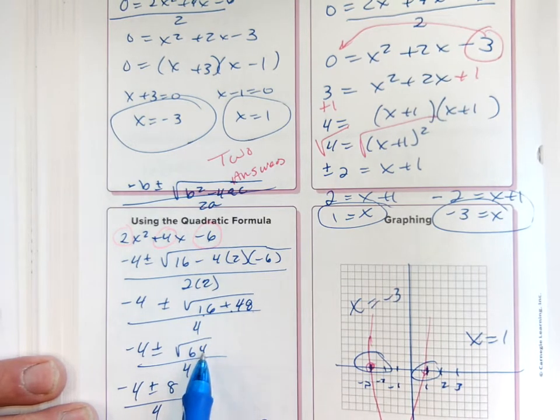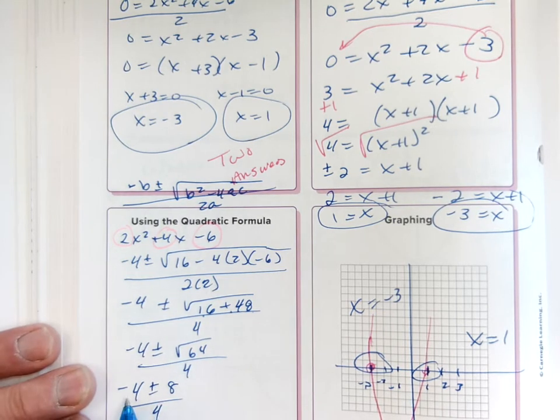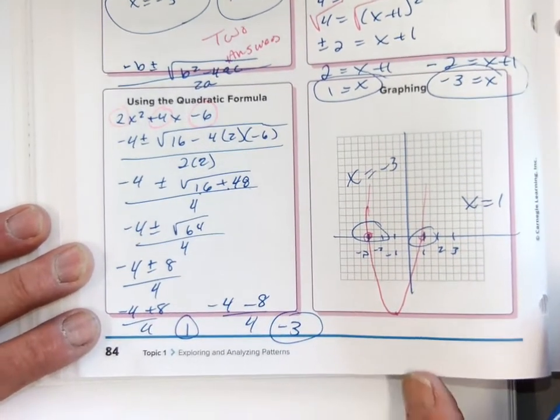I took the square root of 64 and got 8. Then (-4 + 8)/4 and (-4 - 8)/4. I get 4/4 which is 1, and -12/4 which is -3. Same two answers.